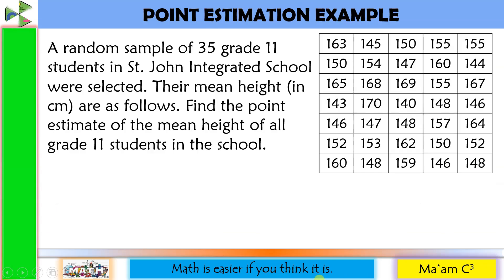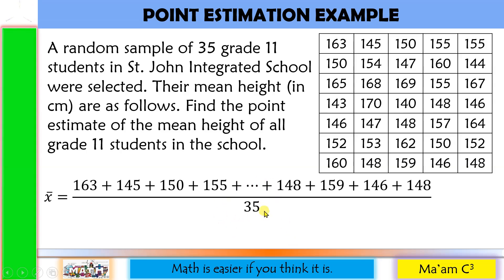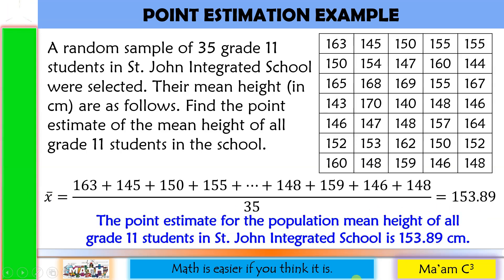Let's have an example for point estimation. A random sample of 35 grade 11 students in St. John Integrated School were selected, and their mean height in centimeters are given. To find the point estimate of the mean height of all grade 11 students, we add all the heights of the 35 samples and divide by 35. The answer, 153.89 cm, is the point estimate for the population mean height of all grade 11 students in St. John Integrated School.